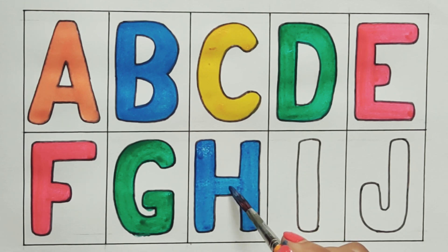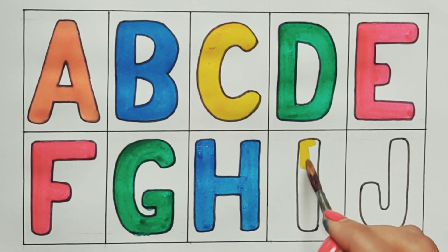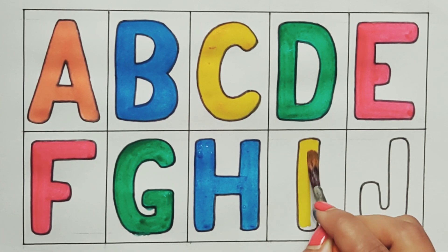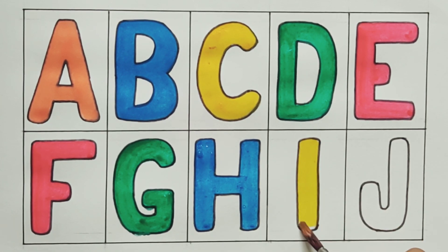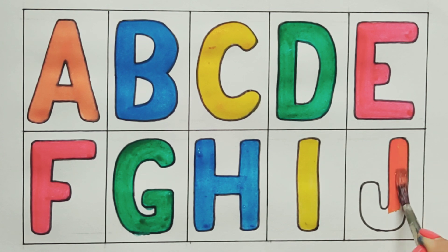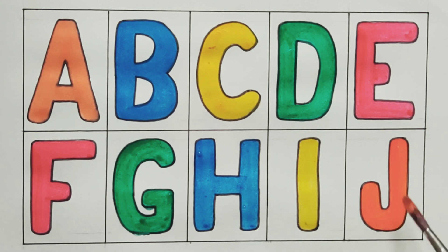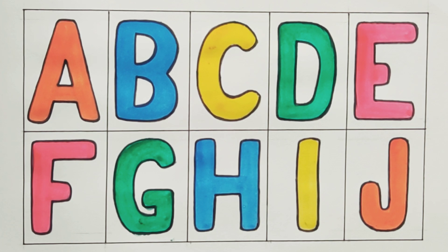A, B, C, D, E, F, G, H, I, J, K, L, M, N, O, P, Q, R, S, T, U, V, W, X, Y, and Z. Now I know my ABCs, next time won't you sing with me?